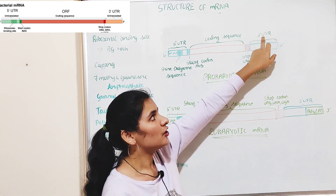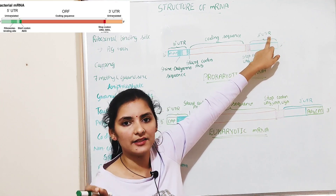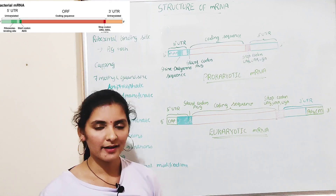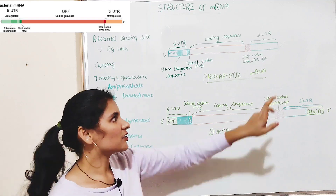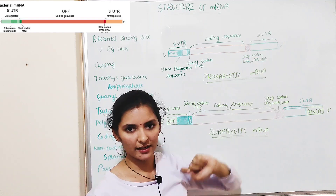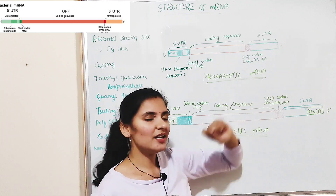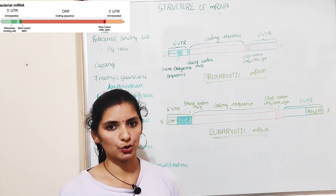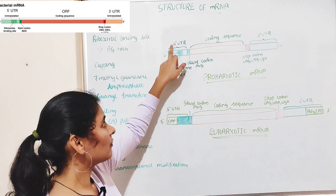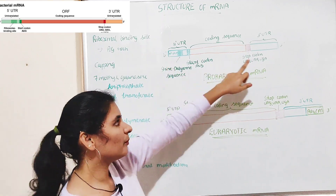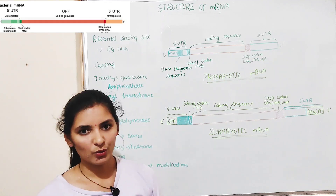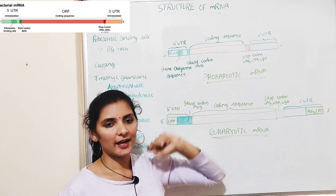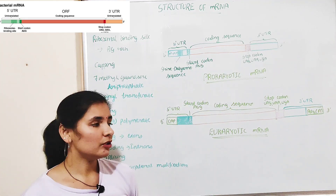After the coding sequence is the 3' UTR region — the untranslated region present toward the 3' end, which is why it is called the 3' UTR. The 3' end consists of an OH group. So the 5' end consists of a triphosphate group and the 3' end consists of an OH group. That covers the different structures present in prokaryotic mRNA.